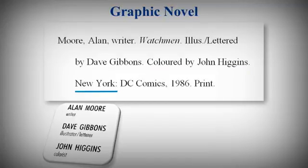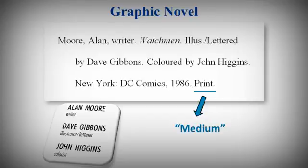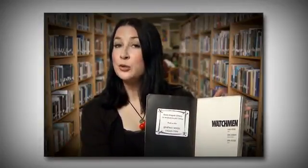Then enter the city of publication, followed by a colon. There's no need to include the state or province. Then the publisher's name, followed by a comma, and the year of publication, followed by a period. Finally, indicate the medium of publication. Medium refers to the format. For graphic novels, the medium would be print.